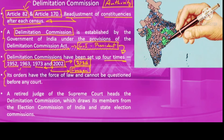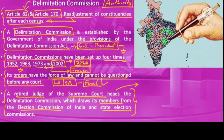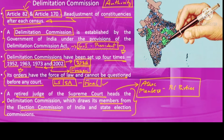Delimitation commissions are a powerful authority — their orders have the force of law and cannot be questioned even in a court of law. Their reports will be tabled in the Lok Sabha and the state assembly, but changes cannot be made and orders shall be final. Such a commission is headed by a retired judge of the Supreme Court, assisted by members from the Election Commission of India and state election commissions, and may include associate members from political parties whose advice, however, is not binding.